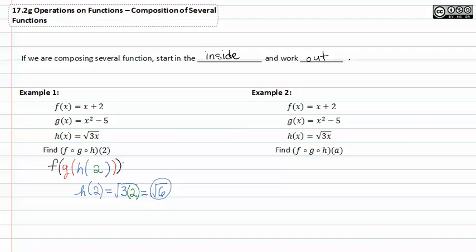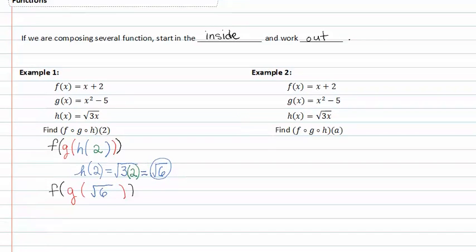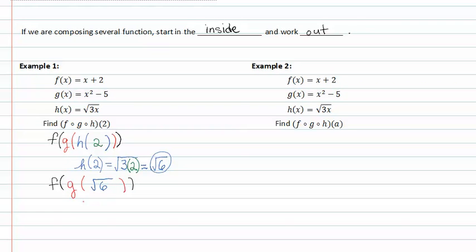Now let's substitute this, h of two in for g of root six. Now we'll have f of g of root six. Now let's look at the g function. g of x is x squared minus five. So g of root six would look like this.